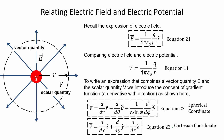Here we find the relationship between electric field and electric potential. Recall the expression for electric field in equation 21 — it is a vector quantity. Comparing this to the electric potential in equation 11, they are identical except for the inverse ratio of the distance r. Since electric potential is a scalar quantity, to write an expression combining vector electric field and scalar electric potential we introduce the gradient function, which is a derivative with a direction parameter. We introduce the gradient function for spherical coordinates in equation 22 and for the Cartesian coordinate system in equation 23.